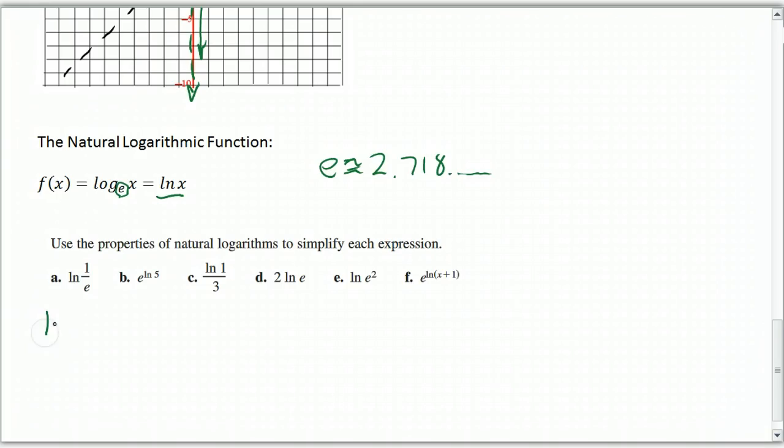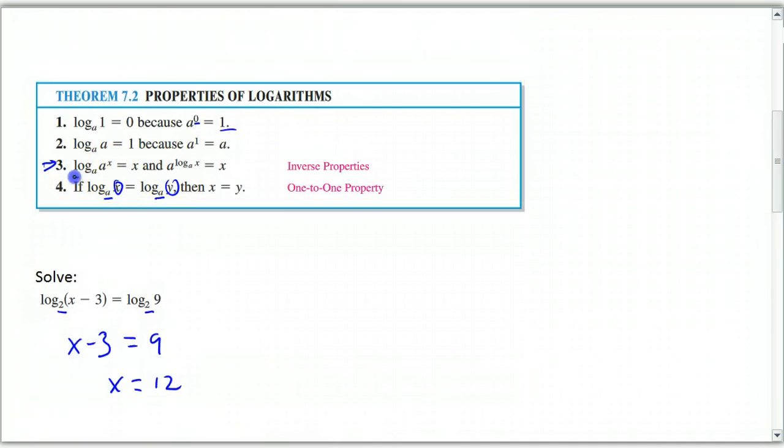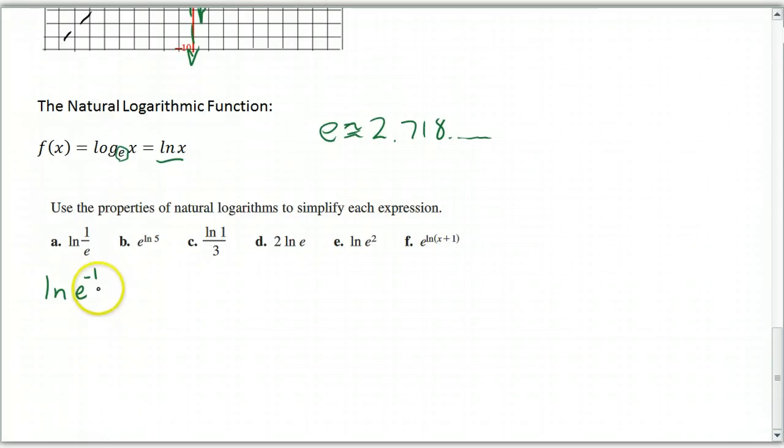So we're going to change 1 over E to E to the negative 1. And by this property right here, we can say that the natural log of E to the negative 1 has to be negative 1.